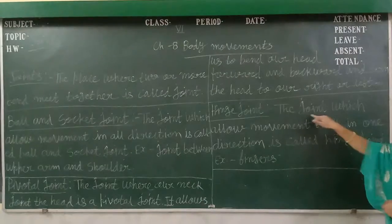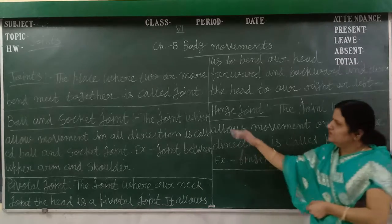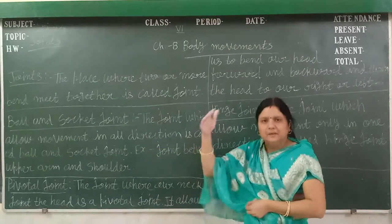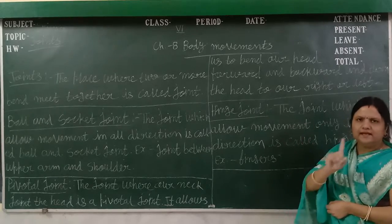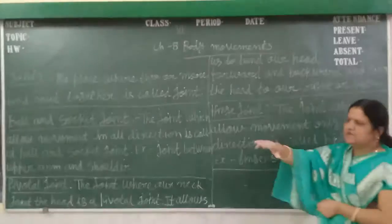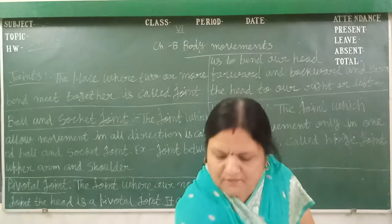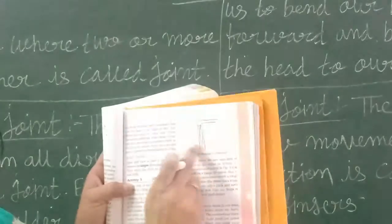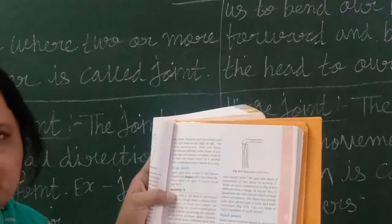Next, hinge joint. The joint which allows movement only in one direction. With the help of the hinge joint, our body moves in only one direction. For example, fingers — they move only in one direction. We can see the hinge joint in this figure, and this type of joint allows movement in only one direction, just like fingers.